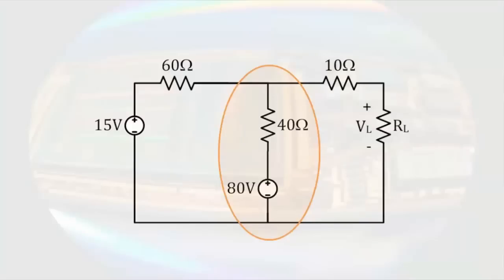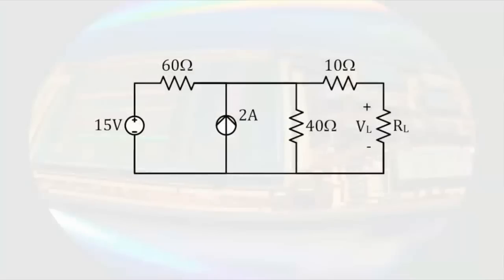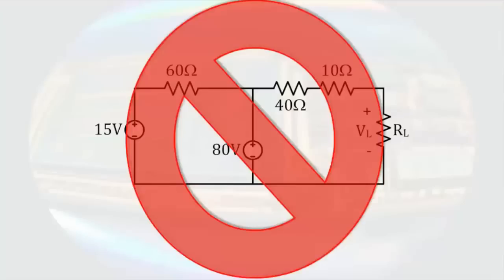A very common error I see when people are learning about source transformations occurs when there is a current source in parallel with a resistor in the middle of a circuit. Students will often try to transform it by having the voltage source and resistor maintain some sort of traditional shape of a voltage source in series with a resistor, like the 15 volt source and the 60 ohm resistor on the left. This results in an entirely new circuit, so the results we will get will have nothing to do with the original circuit. In other words, they will be junk.